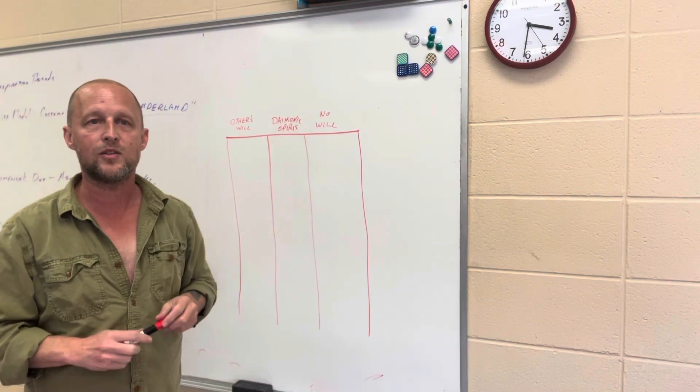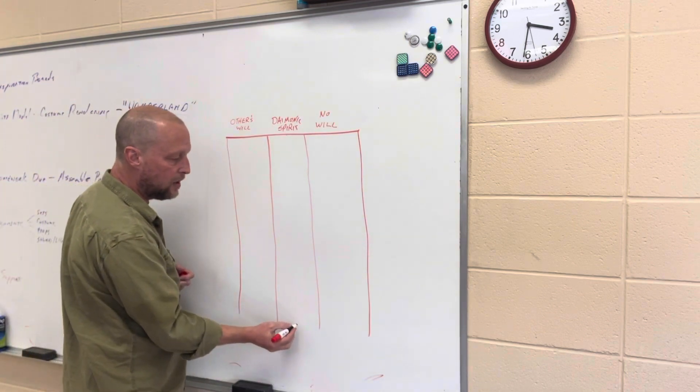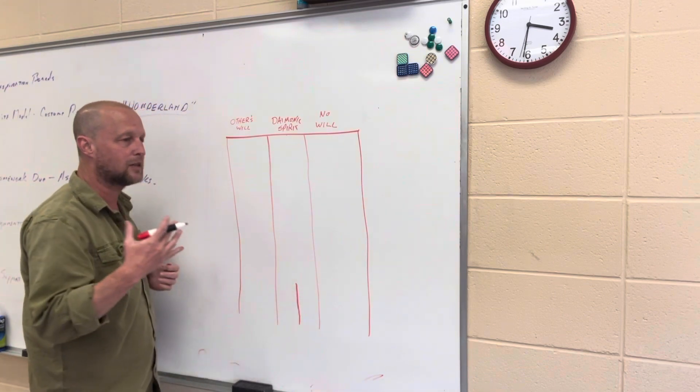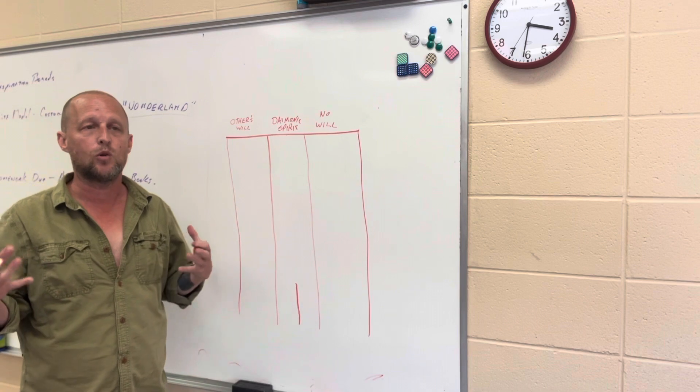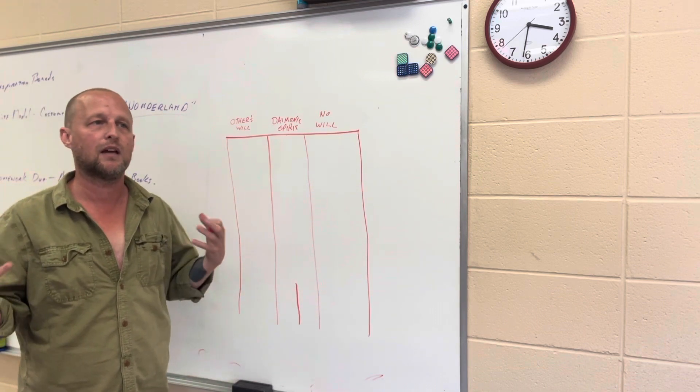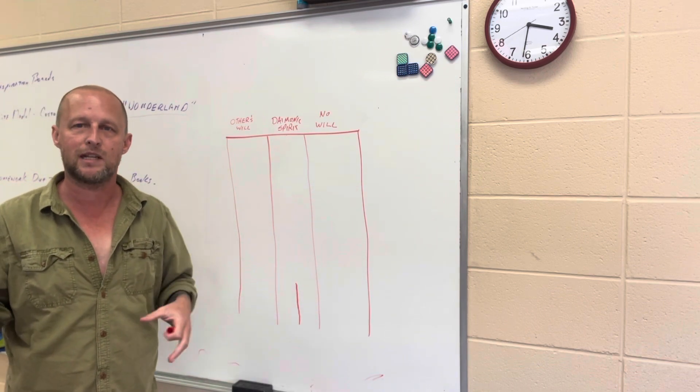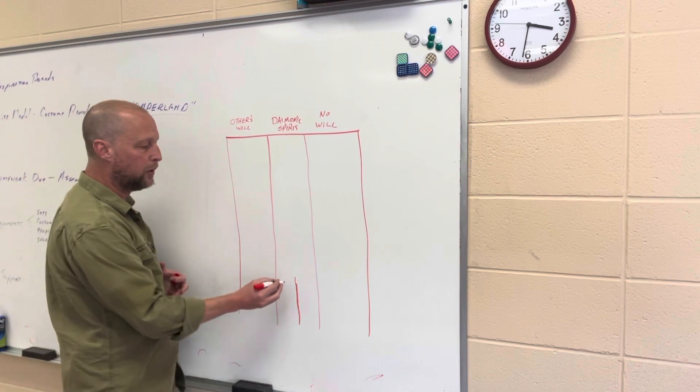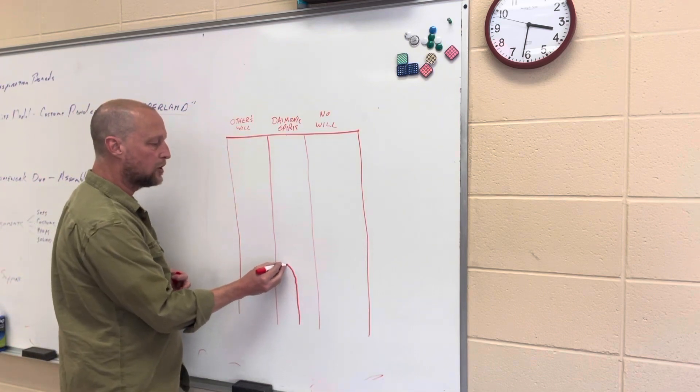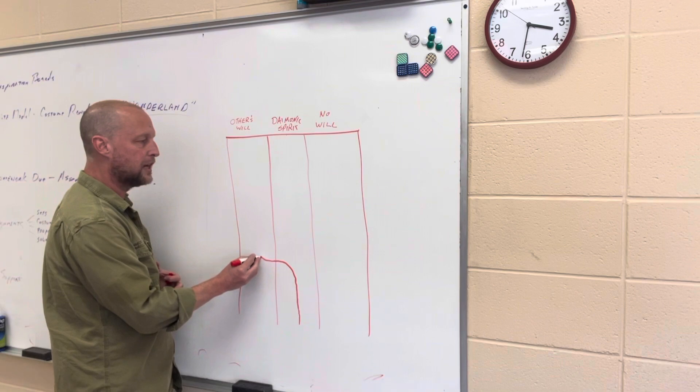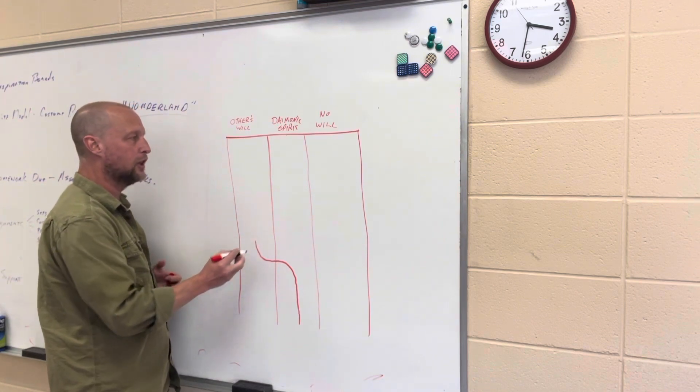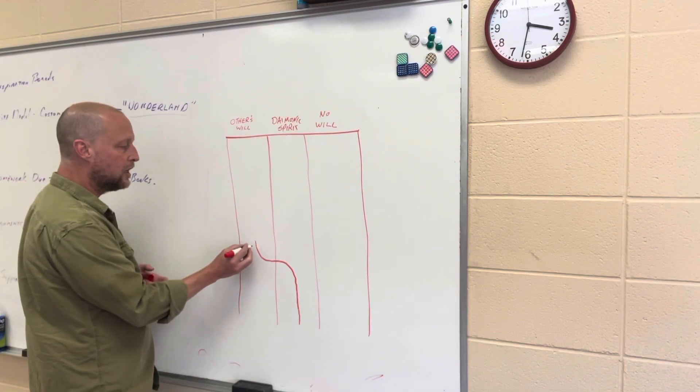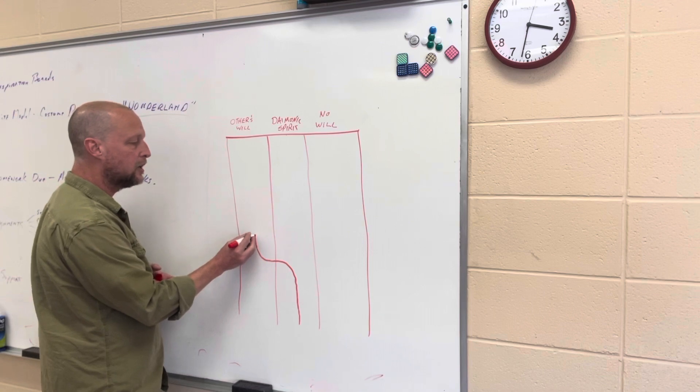And so when you're young, say zero through seven, it's very easy to be under the influence of that daemonic spirit because you're just kind of doing the things that you love to do. You haven't really picked up any of society's programmings. And then eventually you start getting pulled or put into school and you start learning from other adults and the values of the culture that you live in. And so that pulls you into others' will for your life.